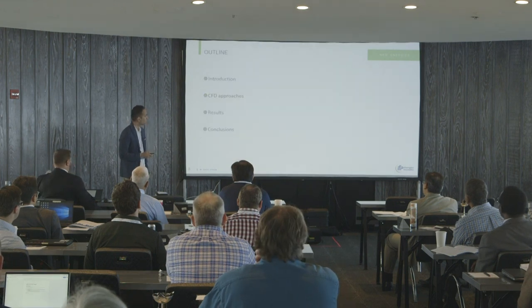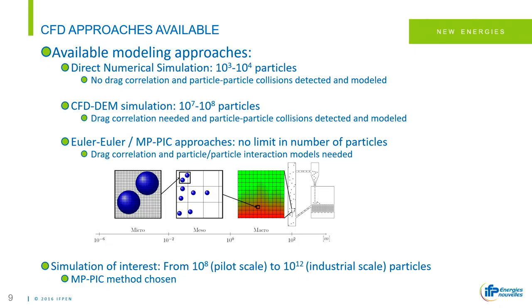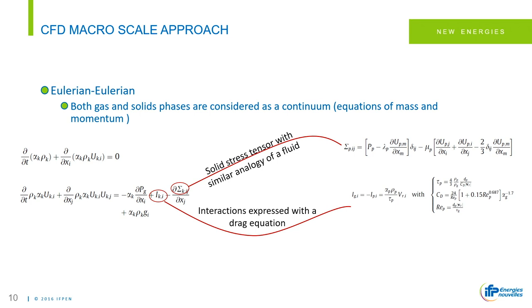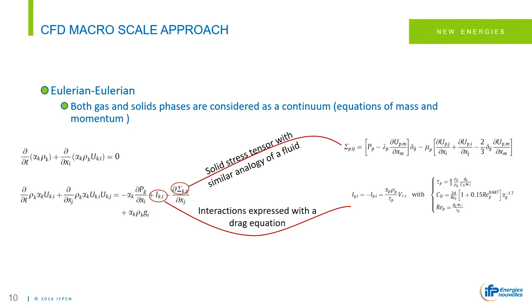I'll give a brief overview of CFD approaches. DNS and DEM can capture particle-particle collisions but are limited in scale. We are interested mostly in approaches with no limit on particle number, because our goal at the commercial scale is technology development. For the Eulerian-Eulerian approach — which I'll compare with Fluent — the solid stress tensor is treated similar to a fluid with a viscosity, and interactions between the two phases use a drag correlation.